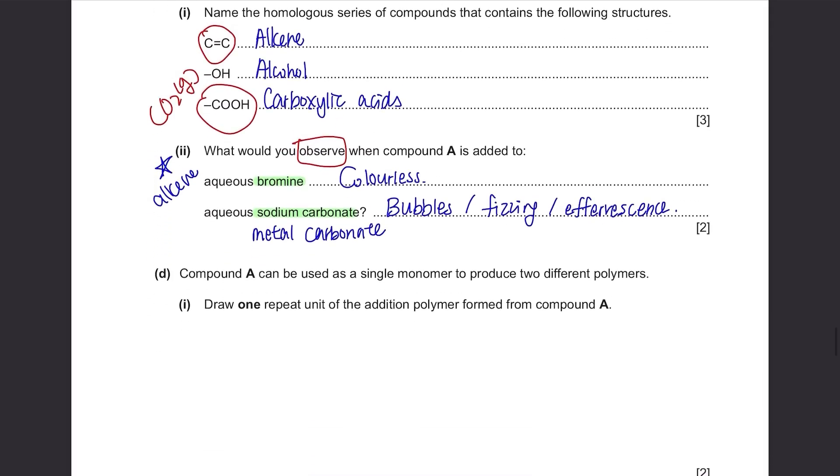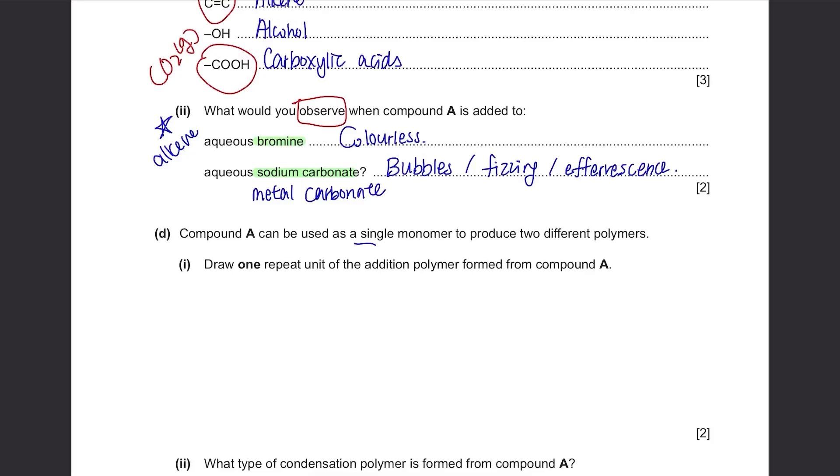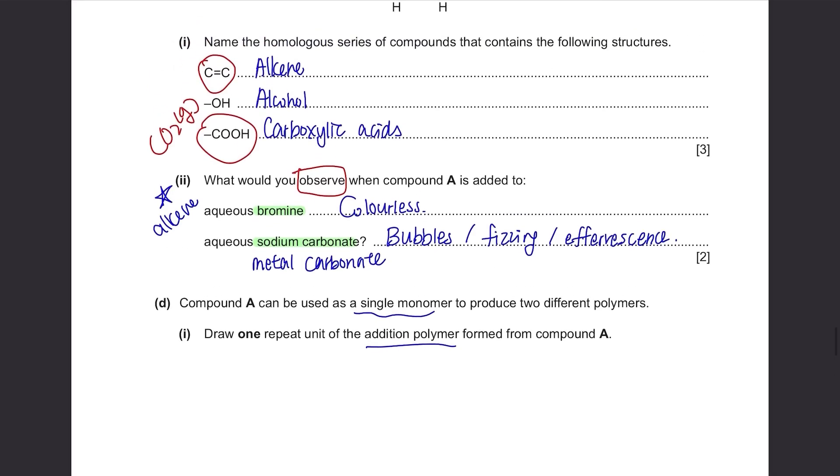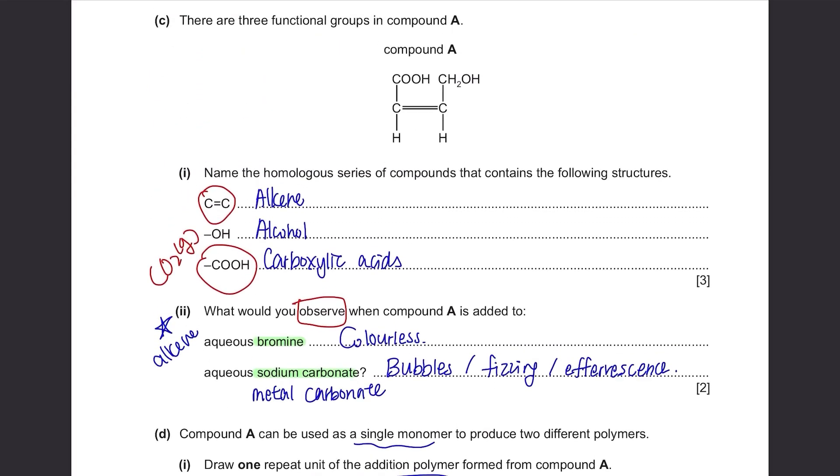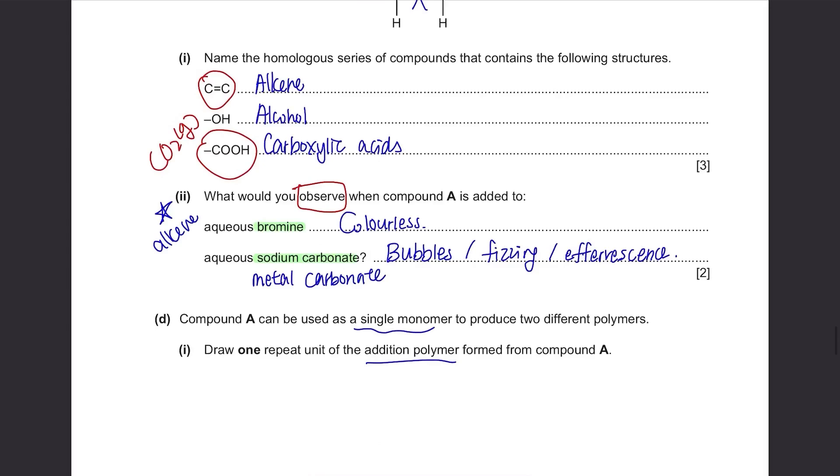Part D: Compound A can be used as a single monomer to produce two different polymers. Draw one repeat unit of the addition polymer formed from compound A. When you want to form an addition polymer, you have to break the double bond over here, and make it single bond, and put these two extension bonds. The rest will stay the same.